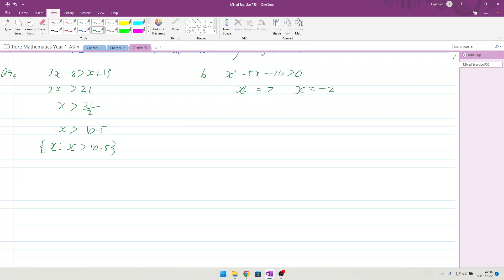What do we do about the set notation on that? If we have a little look at what that graph looks like, it's a positive x squared, so if we were to draw it, it's going to go through at 7, go through at minus 2, and curve around like this.